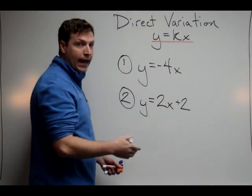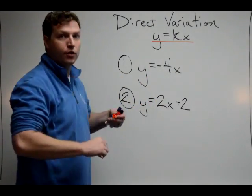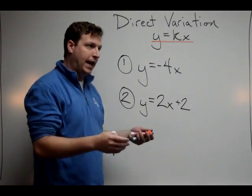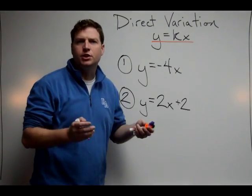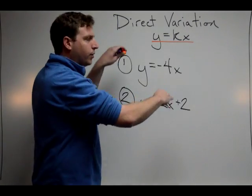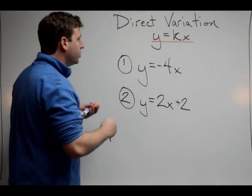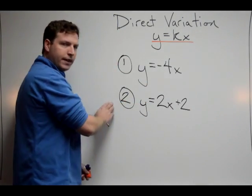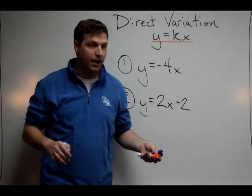We have x and y, and where k is the coefficient or the constant in front of x, like it's the change. What's the change, the direct change that's going to vary the two? So we want to know, are either of these direct variation, and if so, what is the k value?